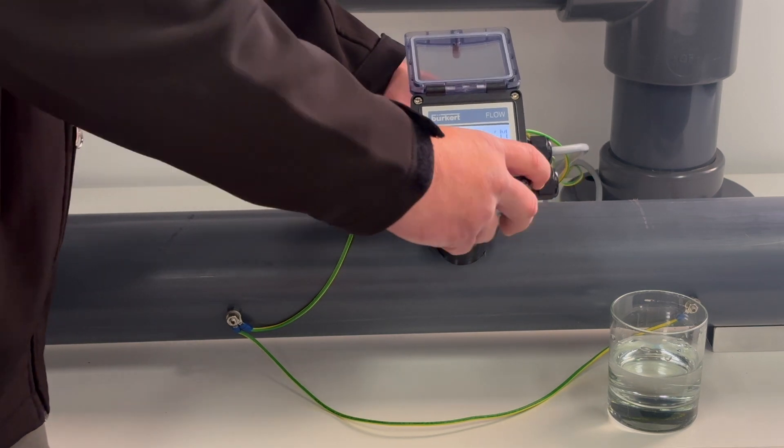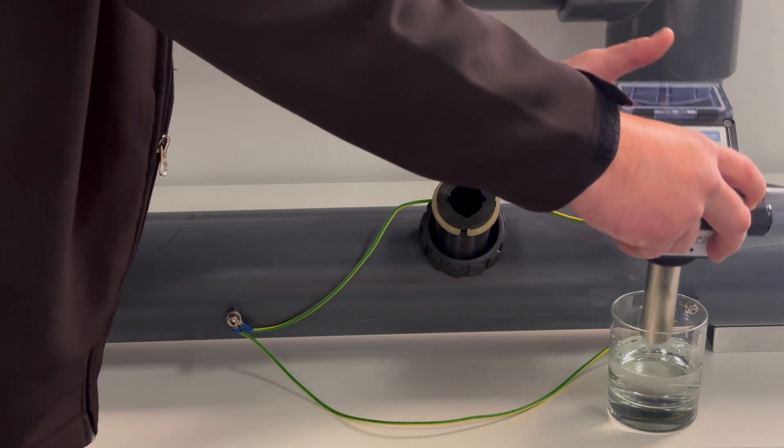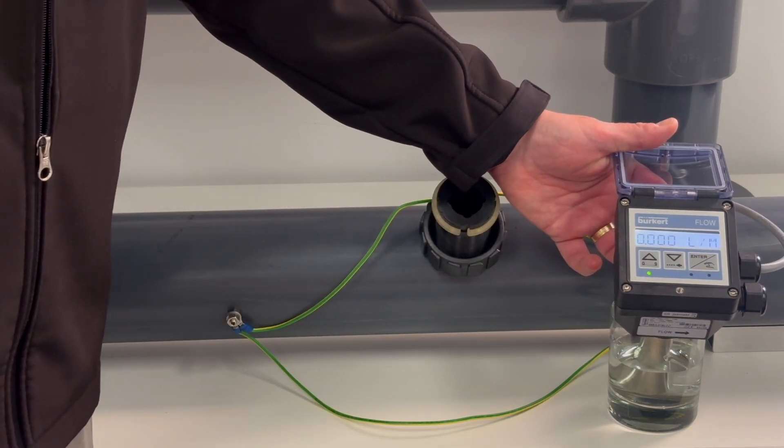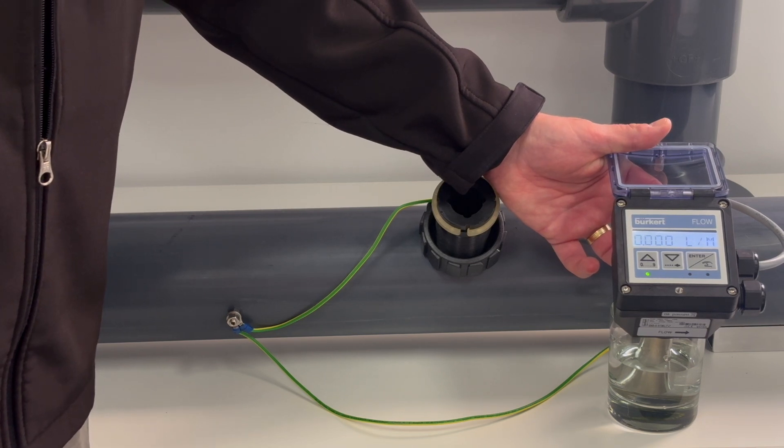Now what I'll do is I'll just take this out of the pipework and immerse it into a glass of water to simulate a full pipe, and you can see that our flow has dropped down to zero and we have a stable reading.